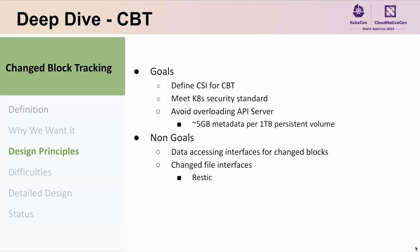There are a couple of non-goals. Data accessing interfaces for changed blocks is not in scope because it's closely related to both the underlying storage system and the backup system — the interface returns only the indexes of the blocks, not the data content on those blocks. Another non-goal is keeping track of changed files. While RESTIC and some storage systems do provide file-level change tracking — building a catalog of file changes based off block changes — this is not the goal of this community in the change block tracking effort.